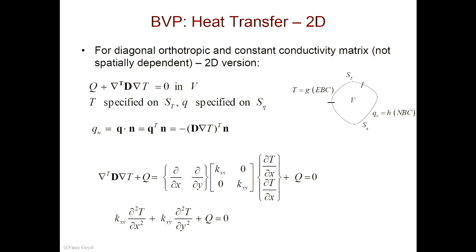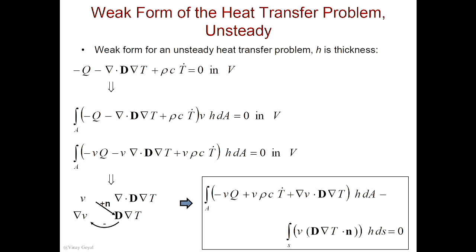So we can now go ahead and develop the weak form of the problem, because what we want to do is derive an approximate solution to this 2D heat transfer problem. To do that, we need to come up with the weak form. I'm going to use — by the way, earlier I had gradient transpose; you can replace gradient transpose by gradient dot, that's the same thing.